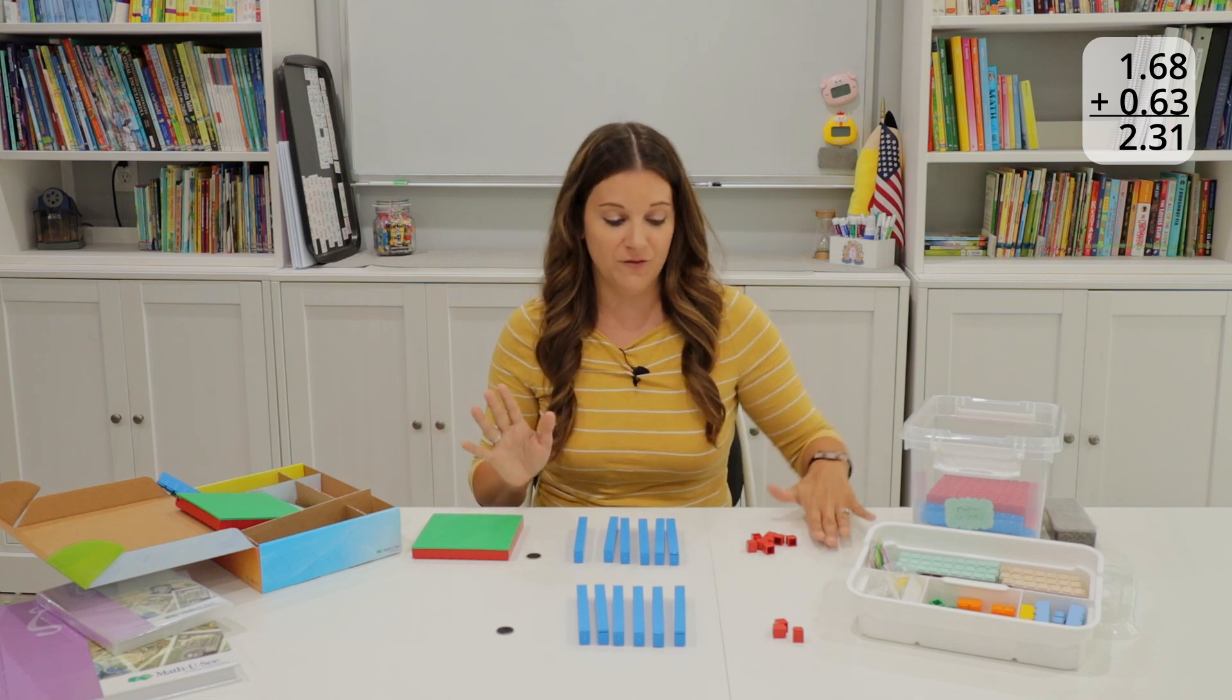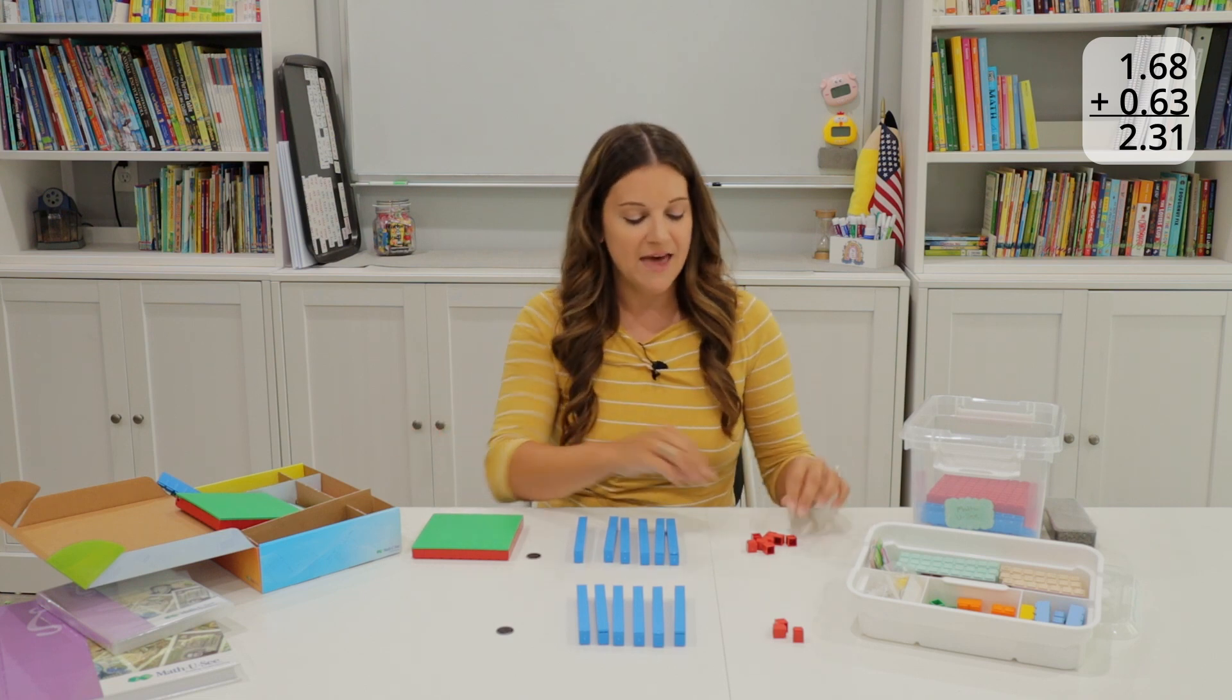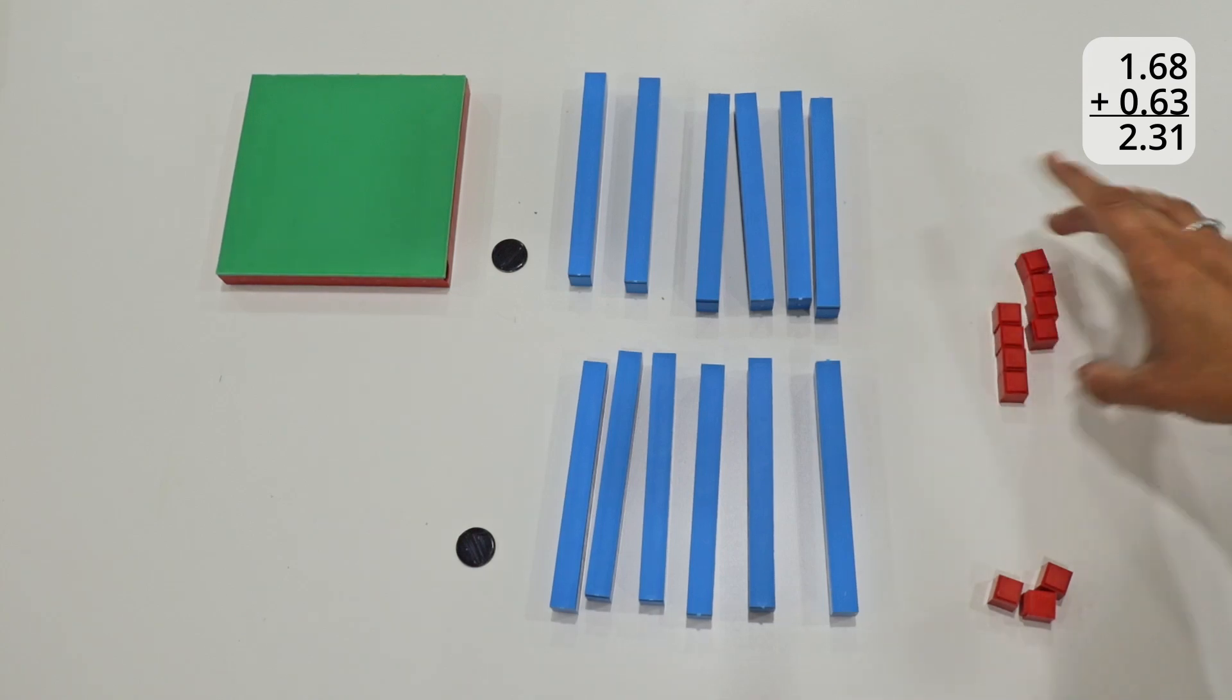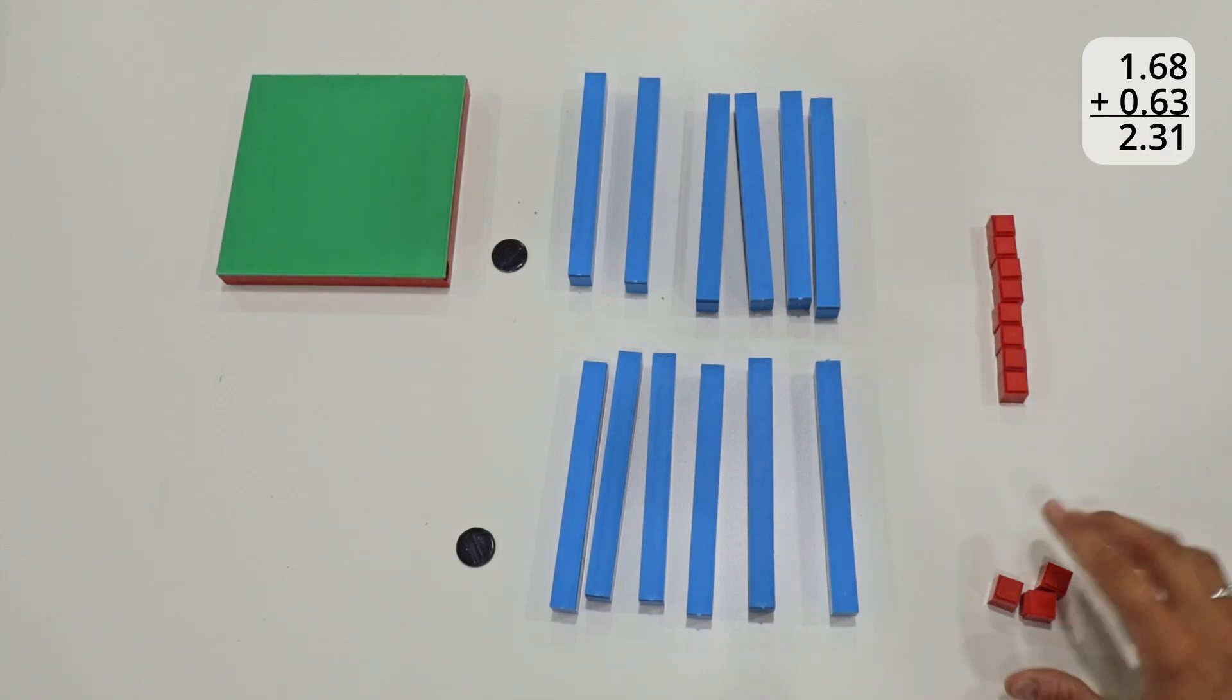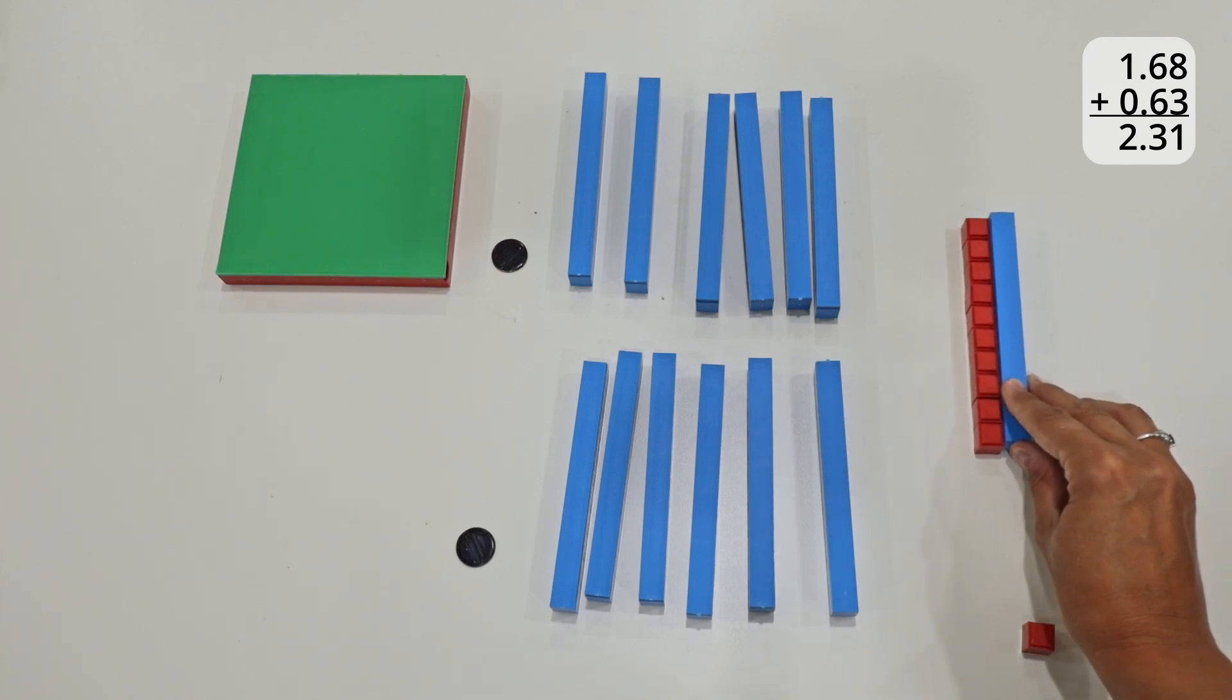I'm going to have them first start over here on this side with the red. They're going to take those little small red blocks, sort of line them up. We have eight at the top and then three at the bottom. So they can, just as they've learned from the other levels of the program, take two from that bottom. So now they have ten of the small hundredth blocks.